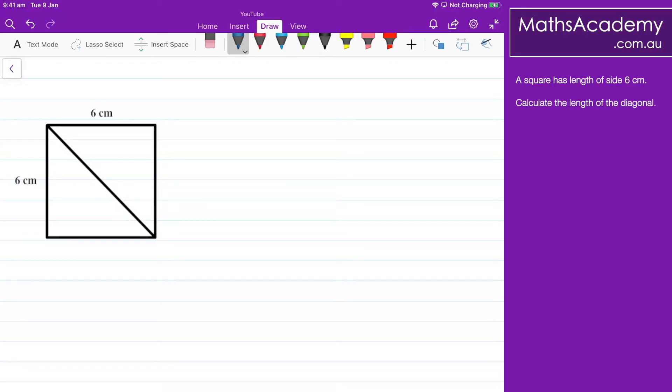Now what I'm looking for with Pythagoras' Theorem is a right angle triangle and here I have a right angle triangle here. Now let me just pop it down below and now we can transfer those lengths.